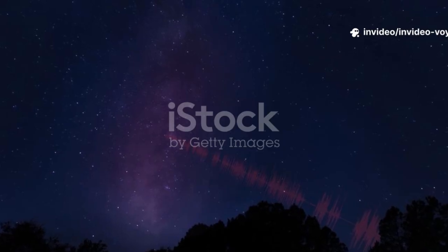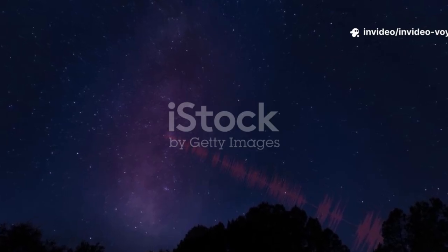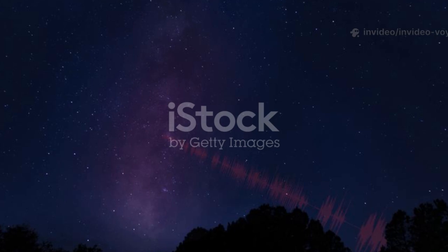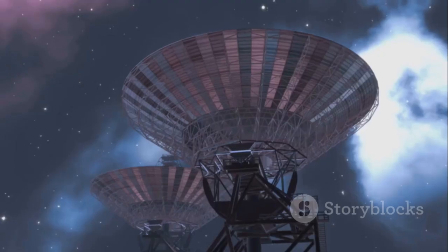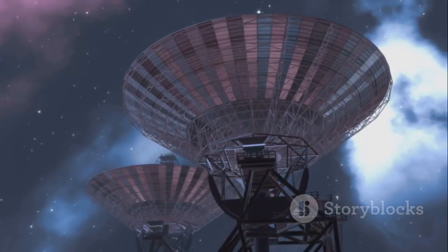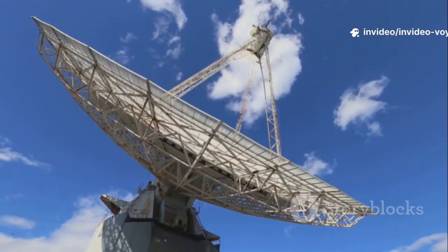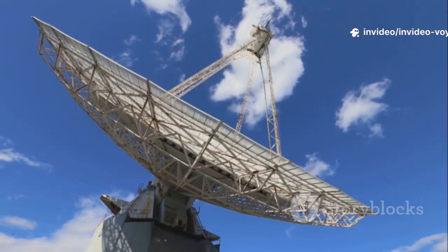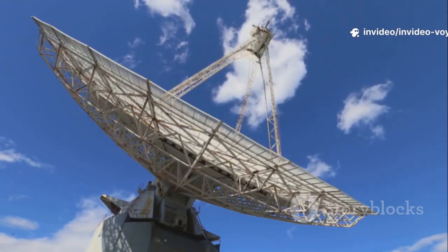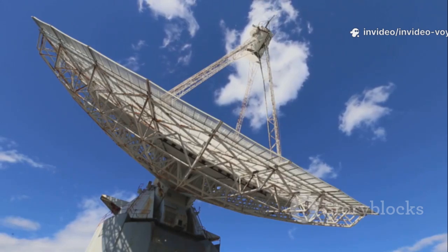It takes more than 22 hours for its messages, traveling at the speed of light, to cross the immense distance back to Earth. The data is collected by the massive radio antennas of the Deep Space Network. These giant dishes are our planet's ears, listening for the faintest whispers from our robotic explorers scattered across the solar system and beyond.